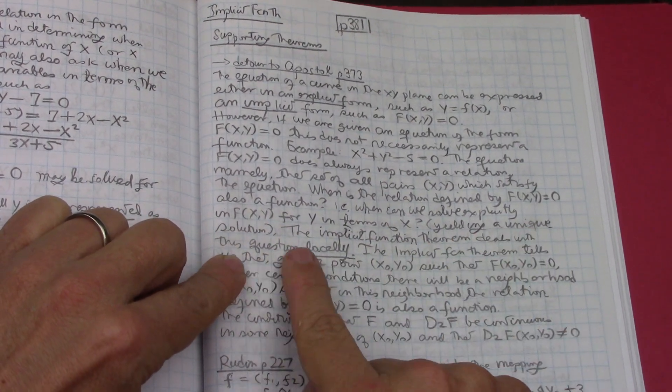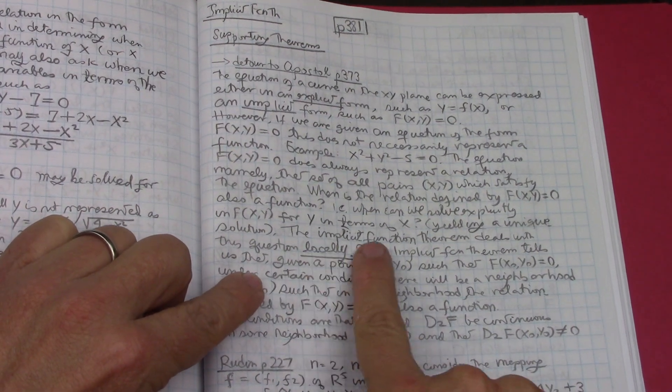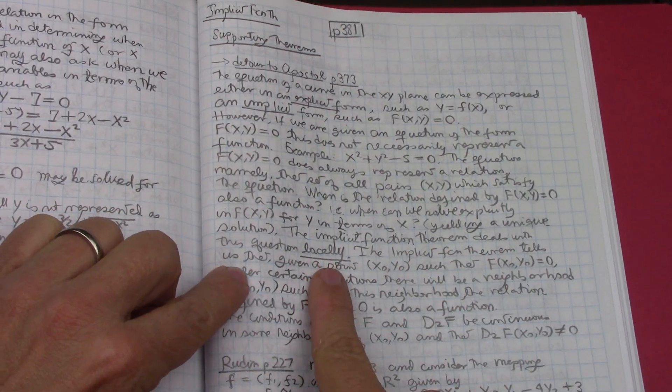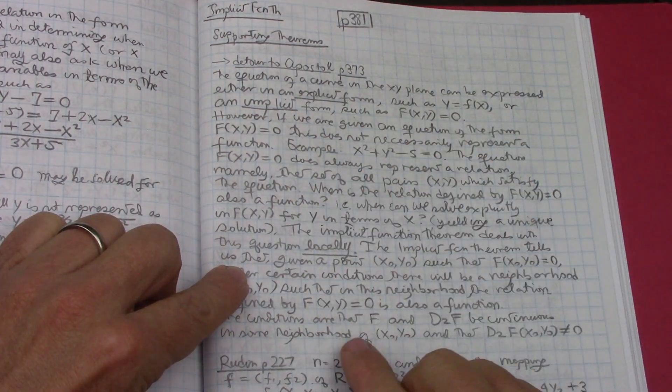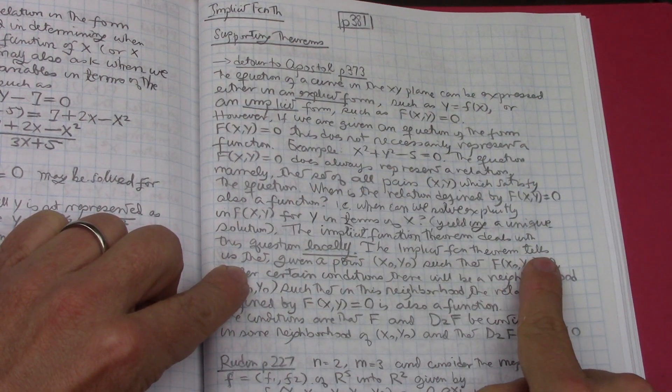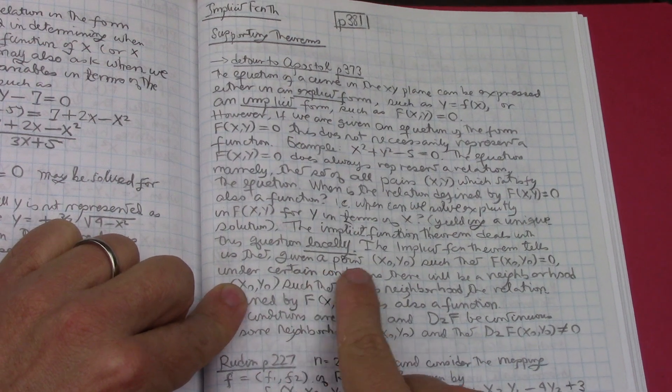When can we solve explicitly in f(x,y) for y in terms of x, yielding a unique solution? The implicit function theorem deals with this question locally, so it's not a global theorem, it's a local theorem.